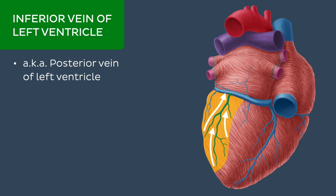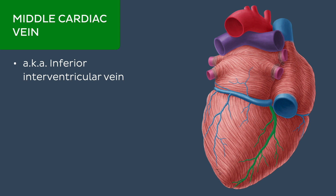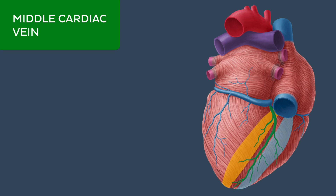One of the large tributaries of the coronary sinus is the middle cardiac vein, also known as the inferior interventricular vein. This vein ascends in the inferior interventricular groove and enters the coronary sinus on the opposite end to the great cardiac vein. It drains the inferior wall of both ventricles and the interventricular septum.